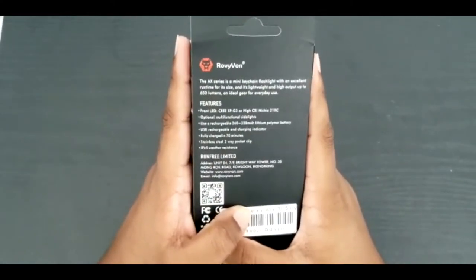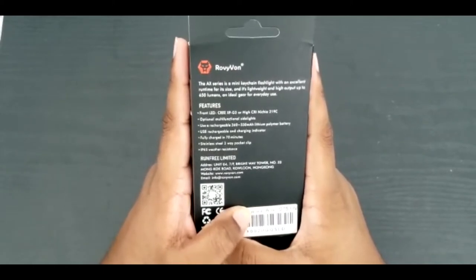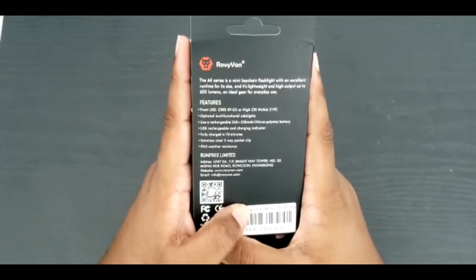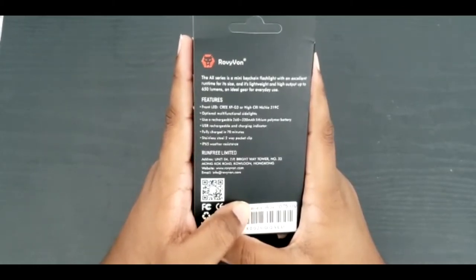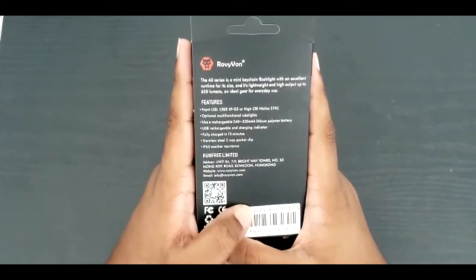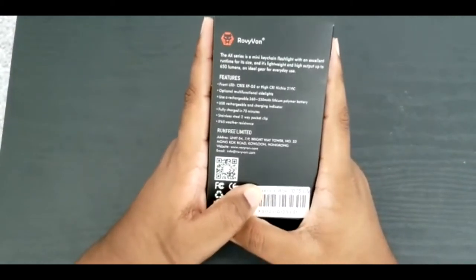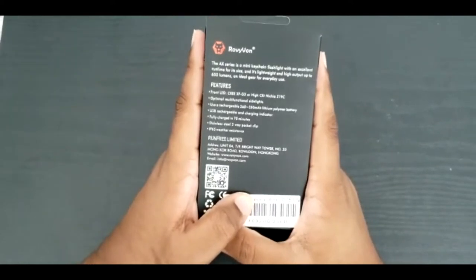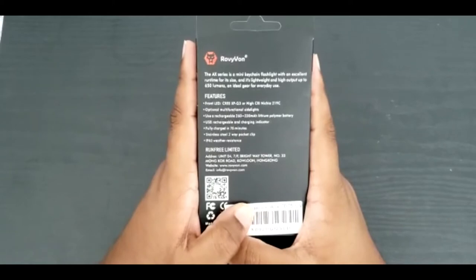The AX series is a mini keychain flashlight with excellent runtime for its size. It's lightweight and high output up to 650 lumens, an ideal gear for everyday use. Features a front LED Cree XPG3, or you can switch it out for a high CRI Nichia 219C.